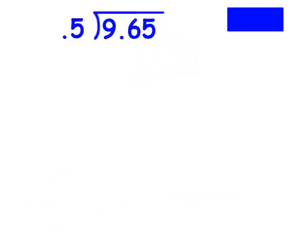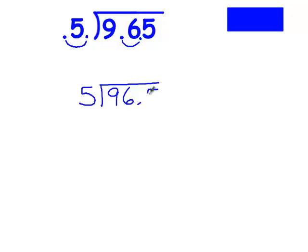The first thing I'm going to do is rewrite this problem and get rid of the decimal point in the divisor. I'm going to do that by moving the decimal point one space to the right. If I do it in the divisor, I need to do it in the dividend. I'm going to rewrite my problem. And I'm going to float the decimal point straight up. I can get 1 group of 5 out of 9.